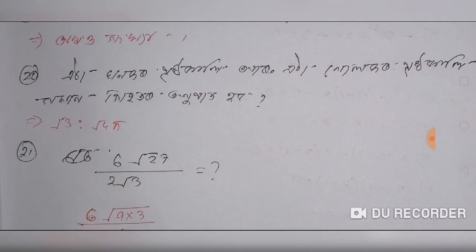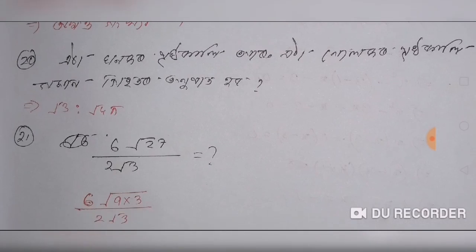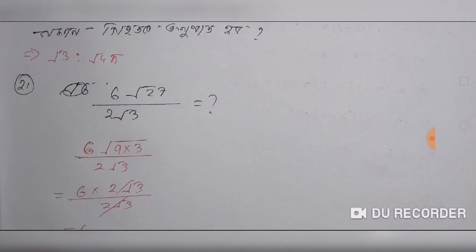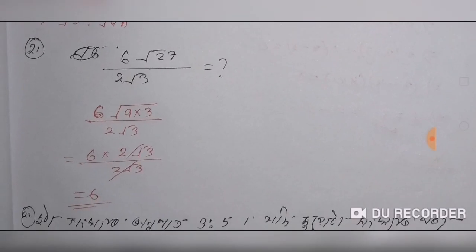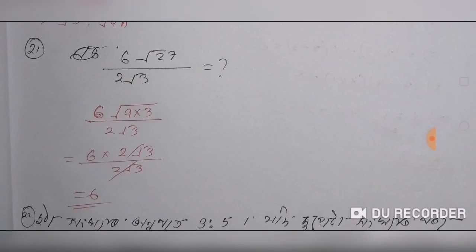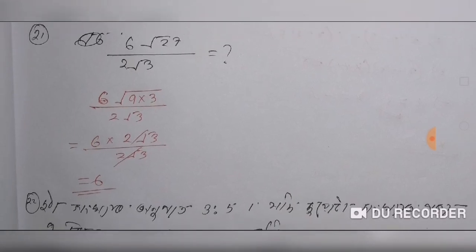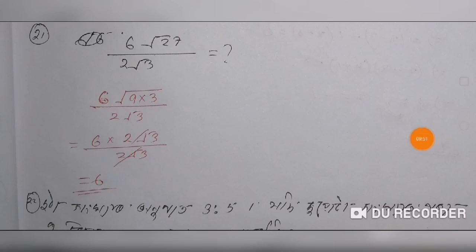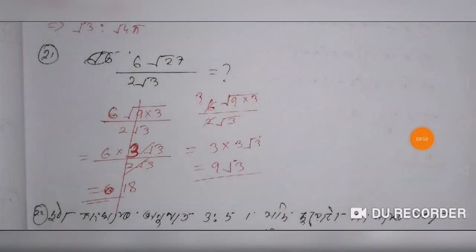Here we go from root 3 to root 4 to root 5. This is the option to hood draw. So this is 6 root 27 by root 2 root 3. This is how much is it? So this is 27 and 9 into 3. This is 9 into 3.